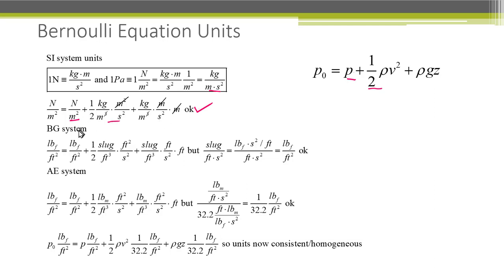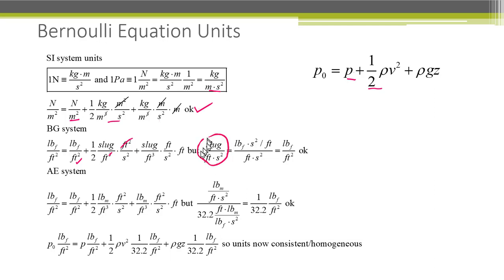We're going to do the same thing in the British gravitational system using slugs. We have pounds force per square foot on the left-hand side. The first term, pressure, is pounds force per foot squared — no problem there. For the second term, one-half rho v squared, rho is slugs per cubic foot. Dividing out the units, the cubic cancels leaving a foot and second squared, giving slug foot per second squared.